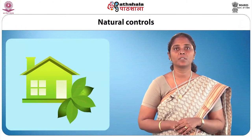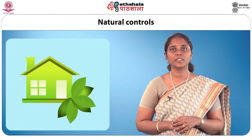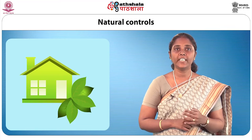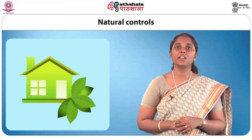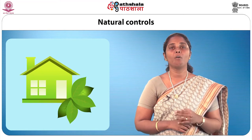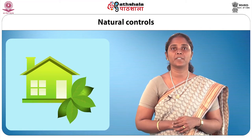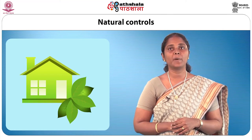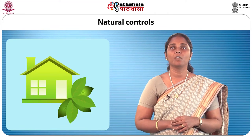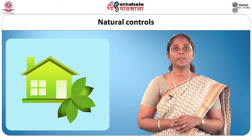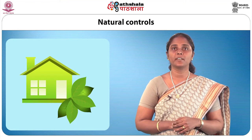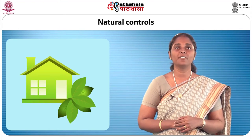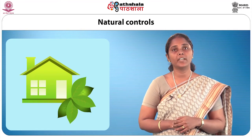Natural controls: certain natural forces help in the increase or decrease of certain types of pests. These forces work independently of human beings and help or hinder the growth of pests. Examples include climate, natural environmental barriers like enemies, water or moisture, and availability of shelter. You should be aware of nature's influence on pests and take advantage of them.